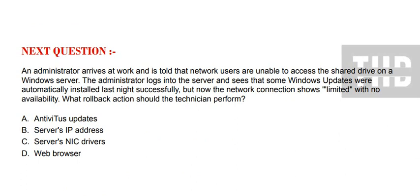Next question: an administrator arrives at work and is told that network users are unable to access the shared drive on a Windows Server. The administrator logs into the server and sees that some Windows updates were automatically installed last night successfully, but now the network connection shows limited with no availability. What rollback action should the technician perform? Option A: uninstall various updates. Option B: server's IP address. Option C: server's NIC drivers. Option D: web browser. The correct option is Option C.